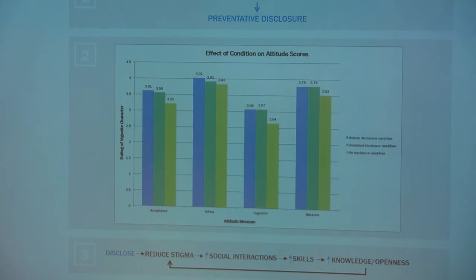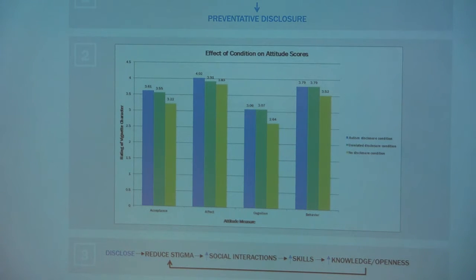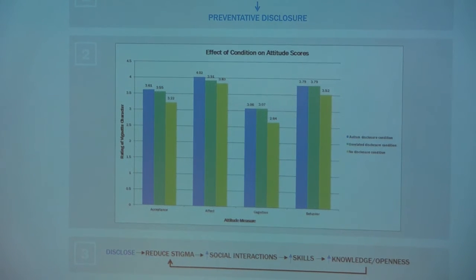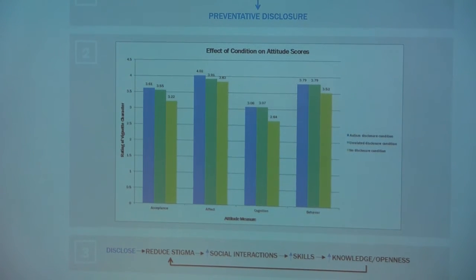However, you'll see a big difference between the blue bars and the yellow bars, meaning that characters who disclosed autism were rated significantly higher than characters who disclosed nothing at all.